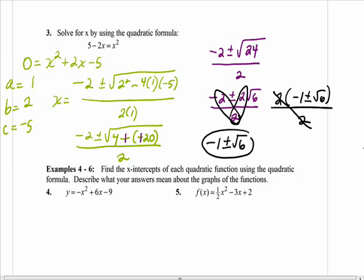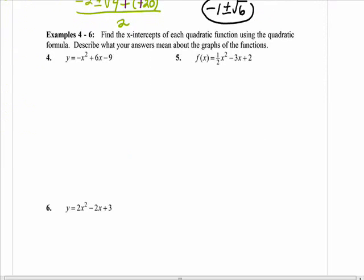Looking at examples 4 through 6, we're going to talk about the quadratic as a graph. Remember we talked about this in the very beginning, that when you solve a quadratic, its solutions are the same as x-intercepts. When you have a parabola, where it crosses the x-axis is the same as if you were to solve that same equation. Looking at number 4, I know that a is negative, and that a is negative 1, b is 6, and c is negative 9.